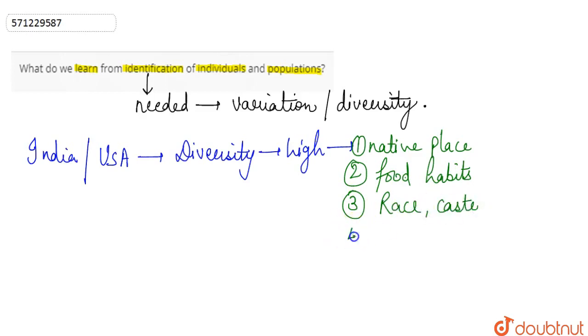So we tend to identify people and we tend to identify a particular individual or population on certain basis. So we learn that basically identification gives us the way to group the people according to some basis or on certain criteria. There could be N number of criteria. So here we have taken the example of a diversified country like India, U.S., where the people can be identified on the basis of their native place, their food habits, race, caste, other than on the basis of their religion. So there are N number of ways that we can identify individuals and population. So this is what we learn from the identification of individuals and population.